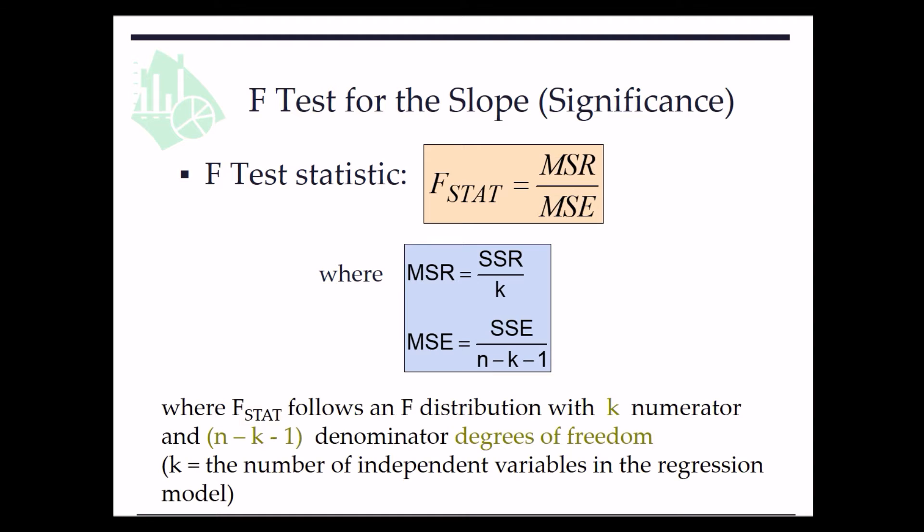So we have k equals 1 for simple linear regression. n is the sample size.